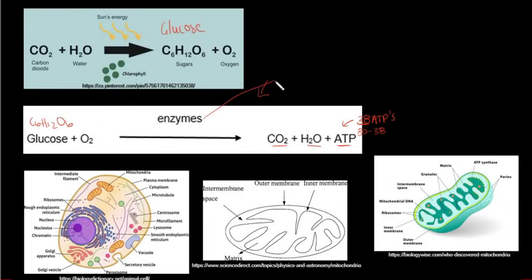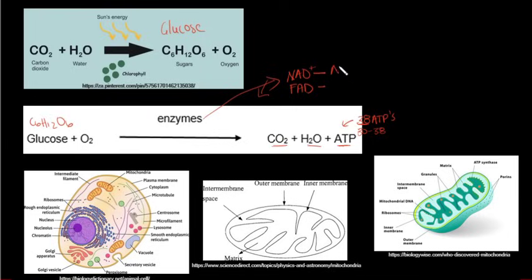The enzymes involved include NAD and FAD, which act as hydrogen carriers — like taxis from photosynthesis. They attach to hydrogen and transport those hydrogens across to the other phases of cellular respiration.